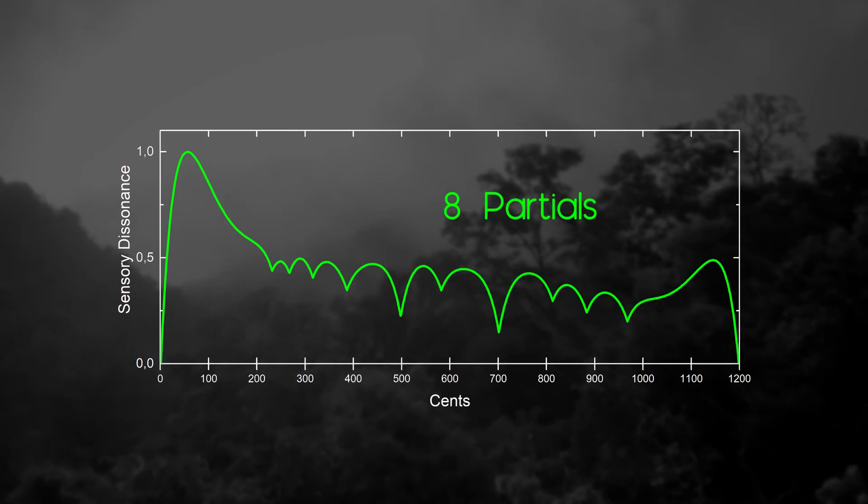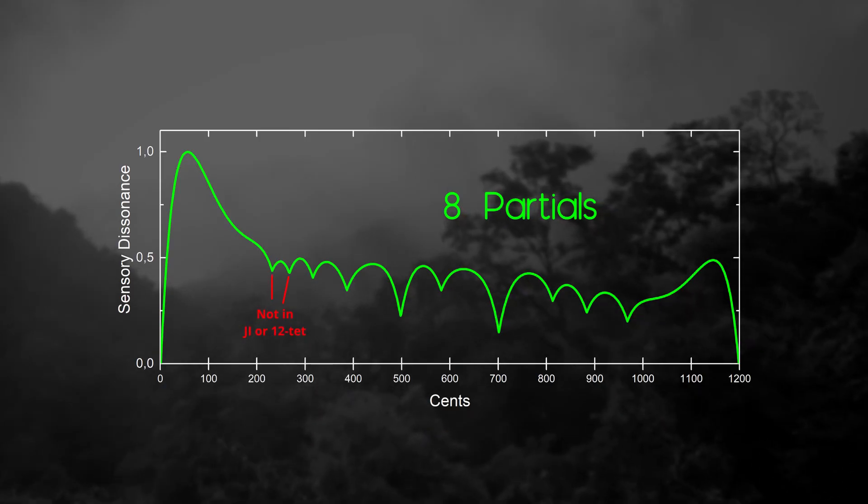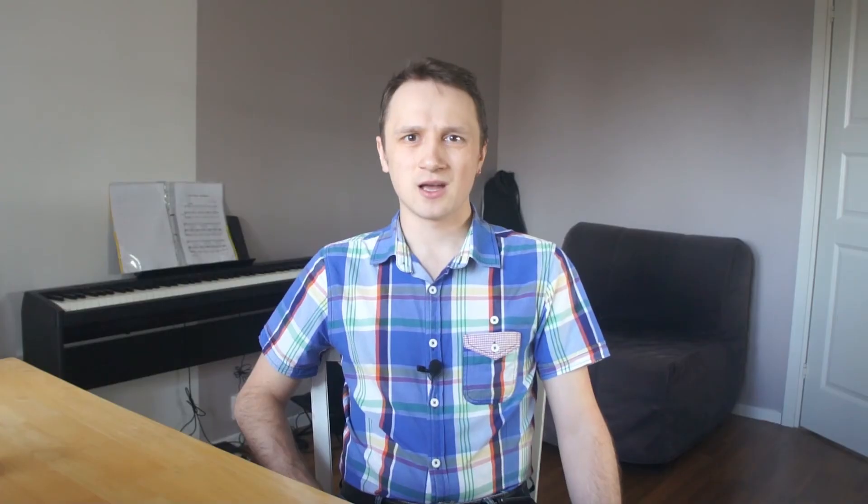At eight partials, dips that do not correspond to any particular note from chromatic scale start to appear. Though we don't really distinguish such high partials that well, so there is no point to go any further.